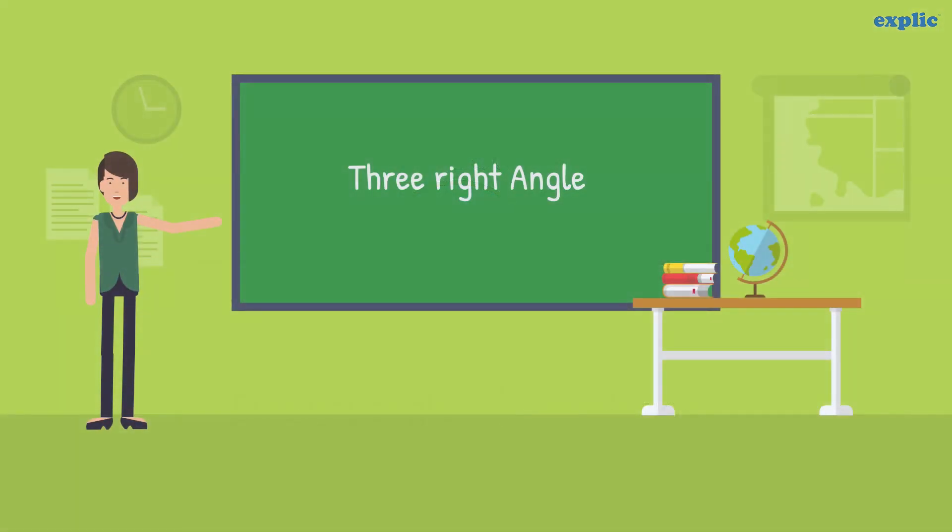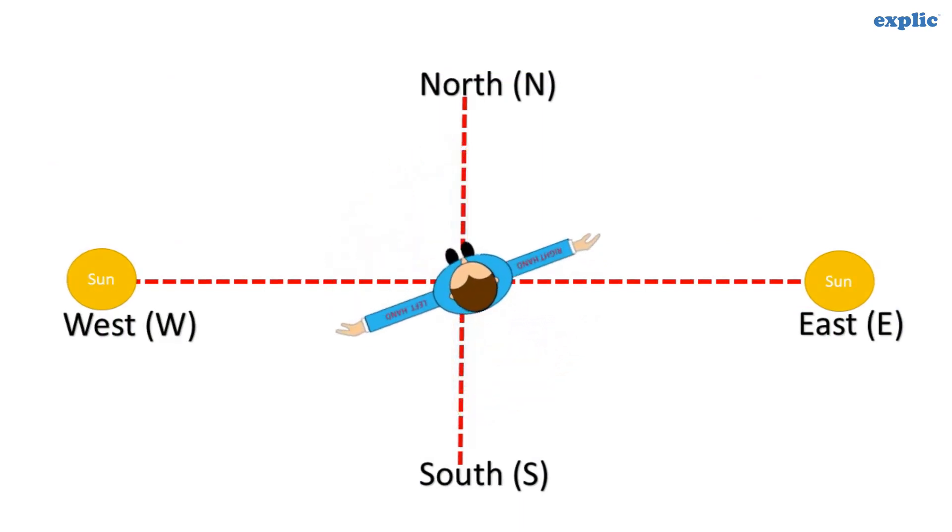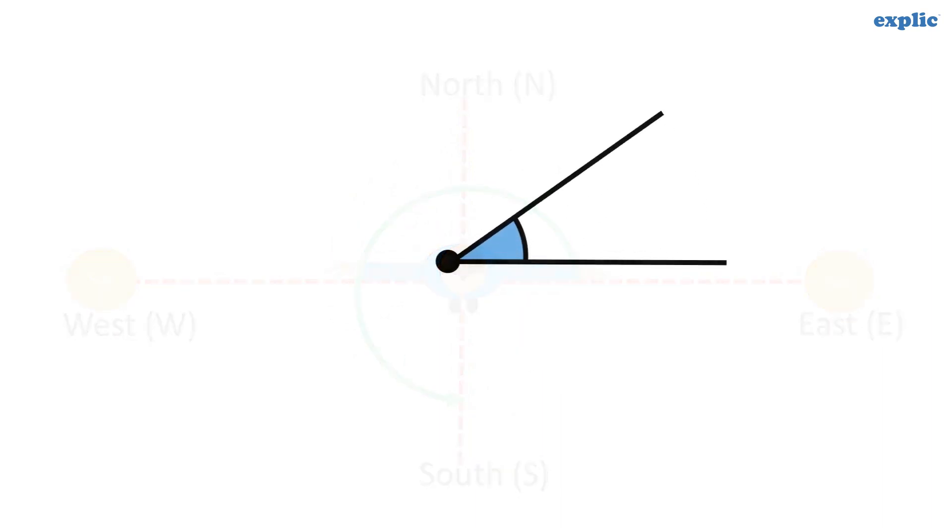If you are standing facing the east, just spin at your place anti-clockwise to face the south direction. The angle you traveled is called three right angles. The measurement of a three right angle is 270 degrees. Three right angles is also called 3 by 4 revolution.